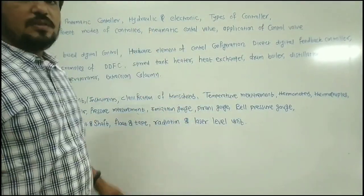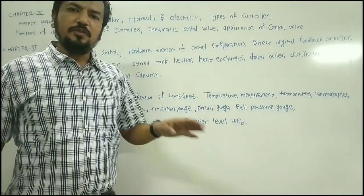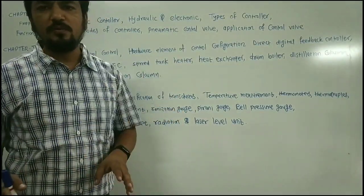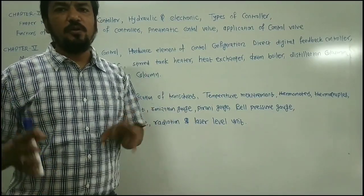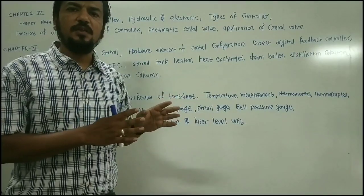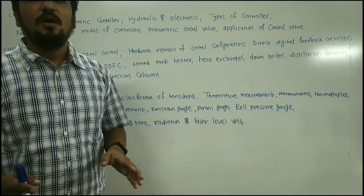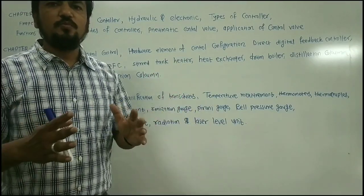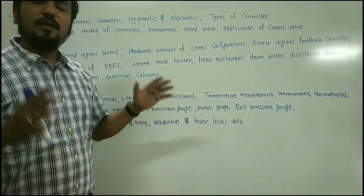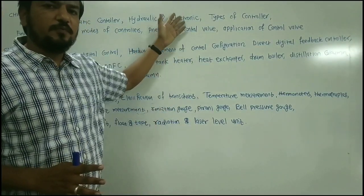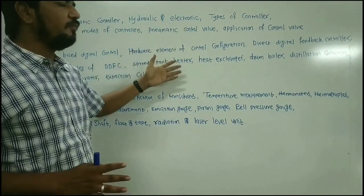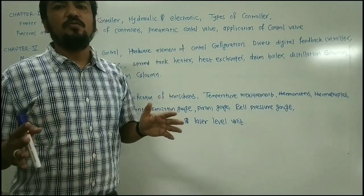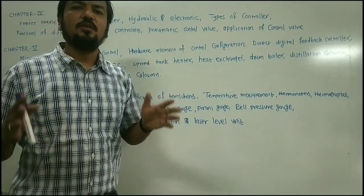This is the syllabus of RTM Nagpur University, which is about 50–60% the same as the Process Control and Instrumentation subject of Amravati University and Pune University. The key difference between these universities is the weightage given to instrumentation. In RTMNU, more weightage is given to control, and all instrumentation is included in only a single unit; while in other universities, chapters four, five, and six are entirely dedicated to instrumentation.